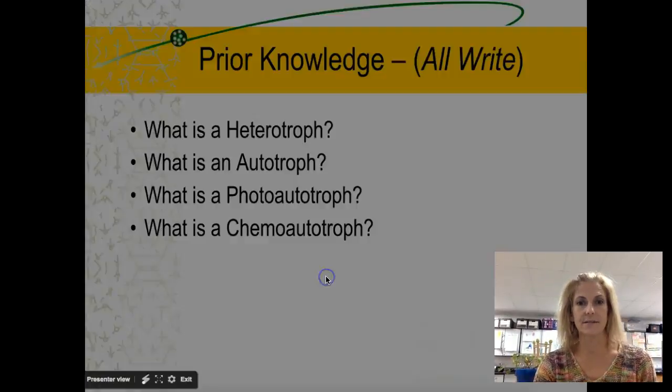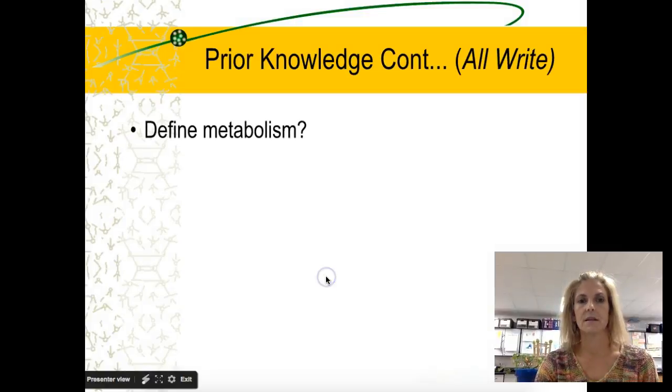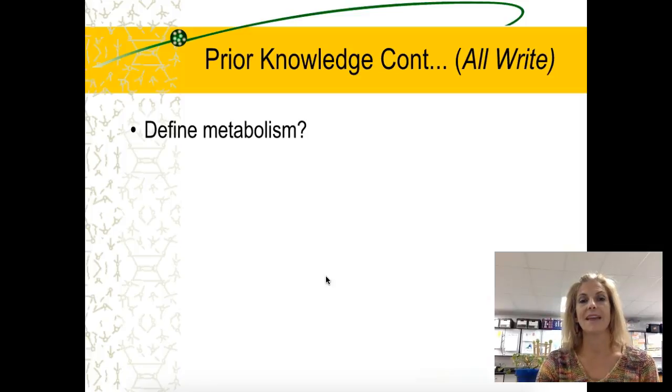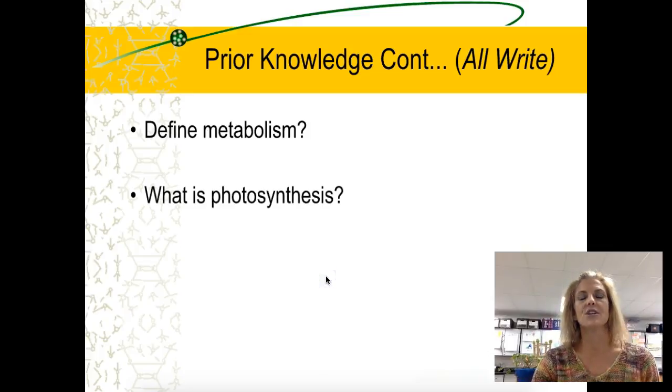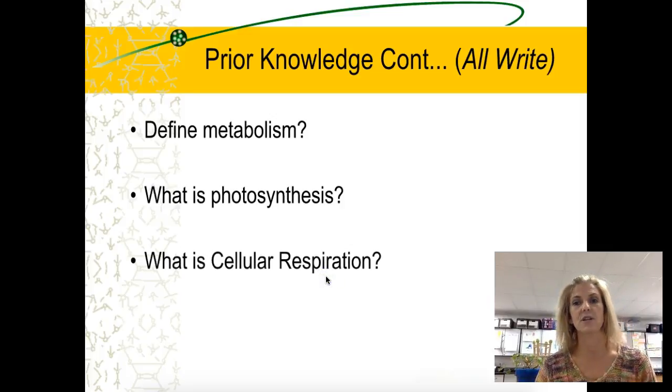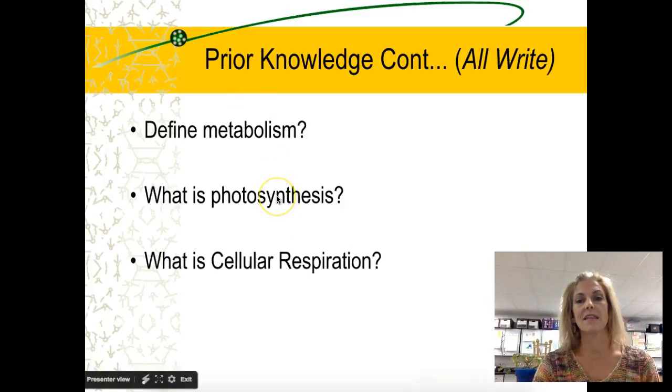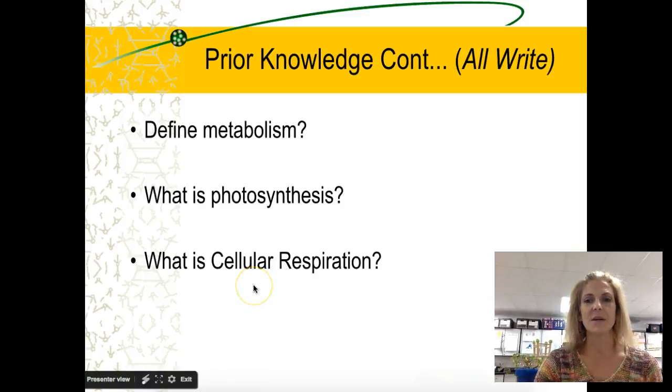Metabolism we talked about in chemistry, so hopefully you jumped at that one and said it's the sum total of all chemical reactions that occur in a cell or body. That would be the things that are building up and the breaking down. In this chapter the building up and breaking down that we're concerned with has to do with photosynthesis and cellular respiration. Photosynthesis is the way that plants use the Sun's energy to make food, and then cellular respiration is the process where we take that food that was made and we convert it into chemical energy that we can use.